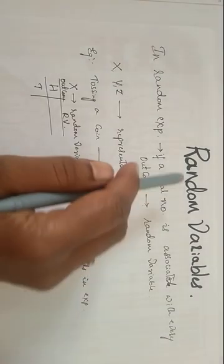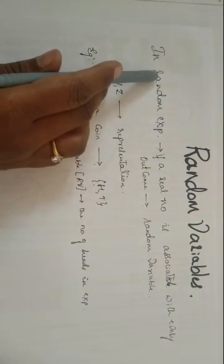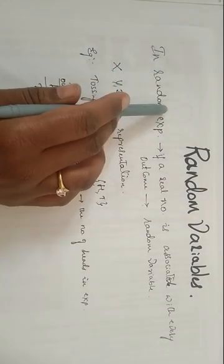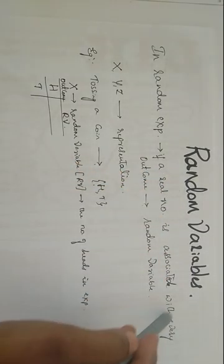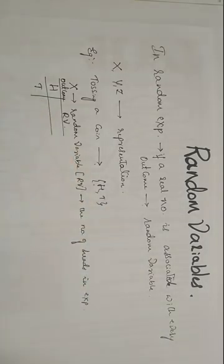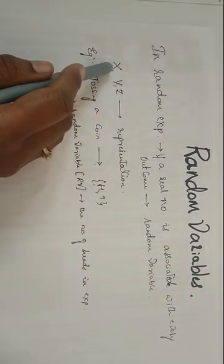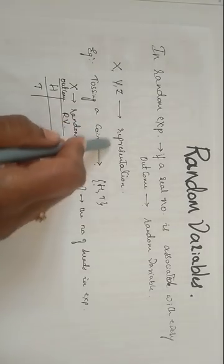The next concept in the syllabus is random variables. What is a random variable? In a random experiment, if it is possible to associate a real number with every outcome, then it is called a random variable. Random variables are represented by capital letters like X, Y, Z.